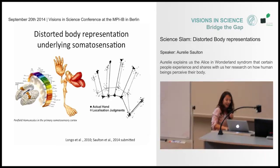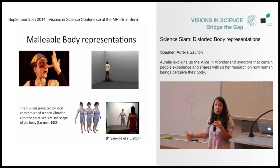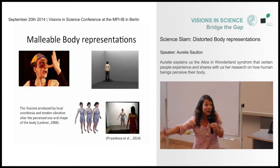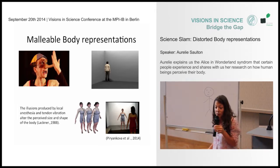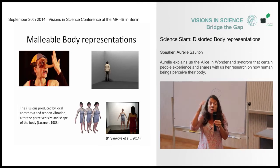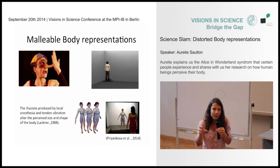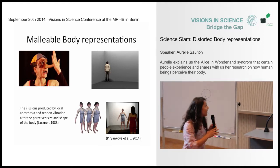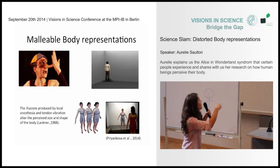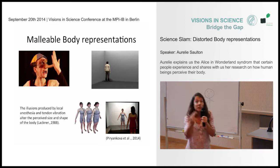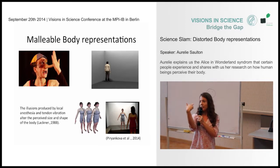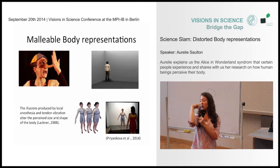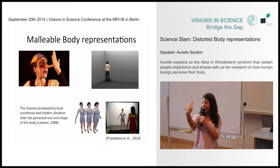The answer lies in the fact that our body representations are malleable. Each time we interact with the world around us, those stored body representations are shaped by the sensory signals around us. For example, one way to change those body representations in the lab would be to put vibration on a tendon while you touch your nose. While you apply those vibrations, you stimulate the proprioceptive system and give the sensation that your nose is growing.